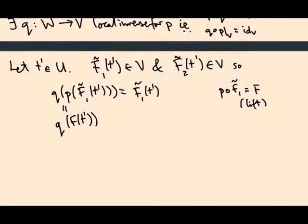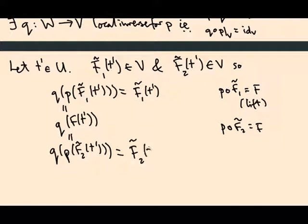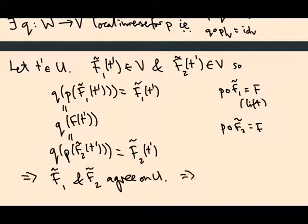In the other direction, I could also say this is equal to Q of P of F2 tilde t prime. By the same reasoning, because F2 tilde is a lift of F. And then, again, using QP equals identity, that tells me this is equal to F2 tilde of t prime. So, F1 tilde and F2 tilde agree on U, and that tells us S is open.